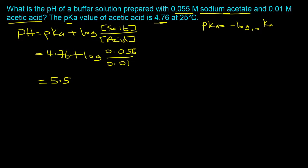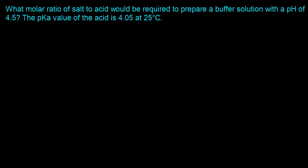Let's move on to the next example. Question 2: What molar ratio of salt to acid would be required to prepare a buffer solution with a pH of 4.5? The pKa value of the acid is 4.05 at 25°C. This time we are going to use the Henderson-Hasselbalch equation to determine the molar ratio. We have an acid and a salt, so the version of the equation we want to use is: pH = pKa + log([salt] / [acid]).